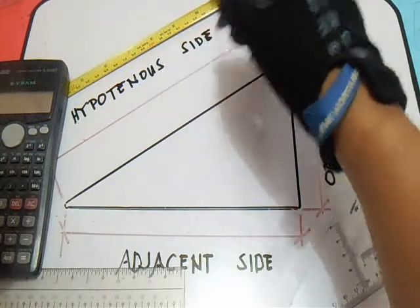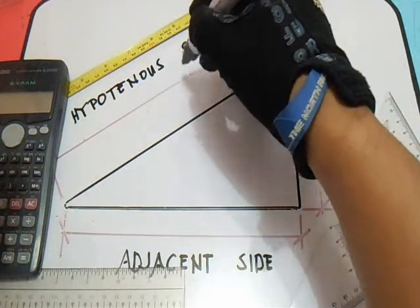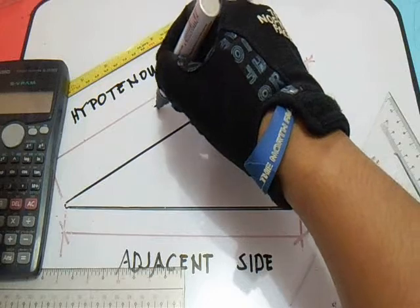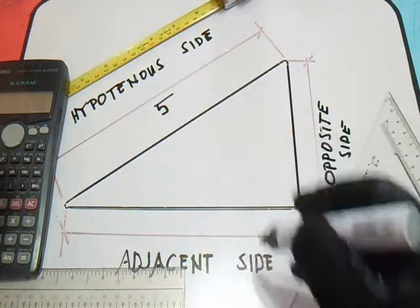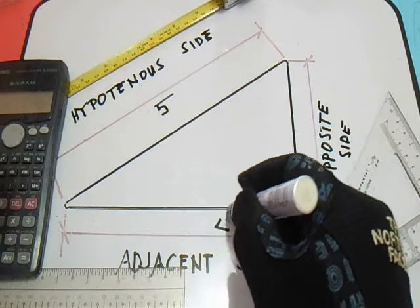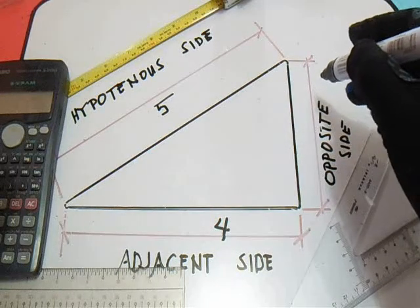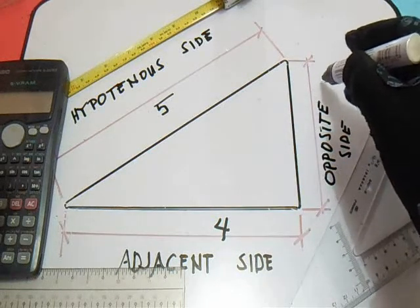Let's say this is 5 and this one is 4, the adjacent side is 4. So the question is, how much is inside?